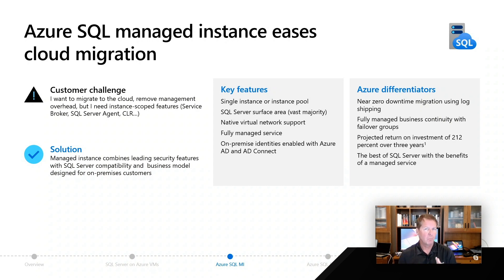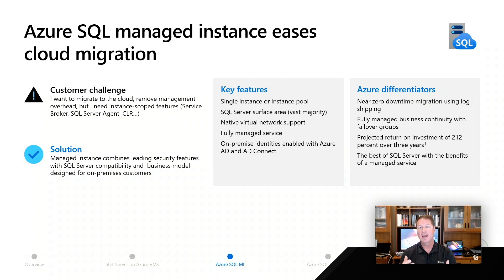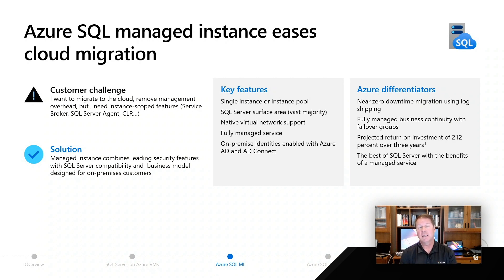There are some great differentiators. One of the really amazing aspects of using Managed Instance to help you get to the cloud is online migrations. We're going to use database backups, restores, and log shipping technology to allow you to do a fairly seamless online migration from your on-premises environment. We're going to give you full managed continuity for business availability with things like replicas and failover groups to almost simulate an automatic availability group scenario, even across regions.